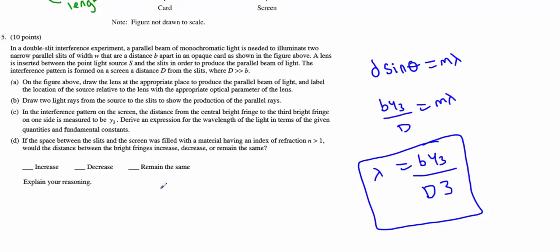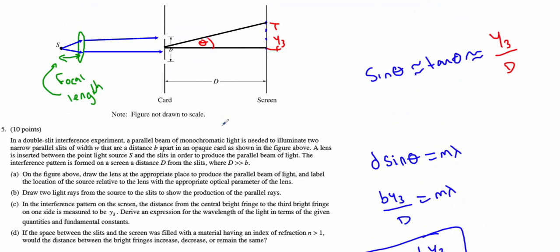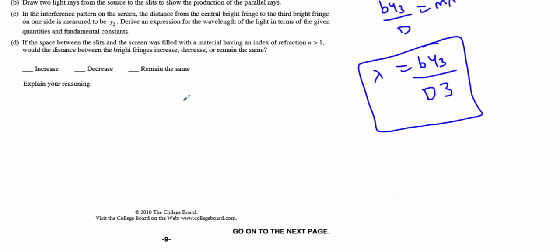Now we've got part D. We're going to fill that space between the slits and the screen with some material greater than n equals 1. So maybe we're filling water in here or something. We want to know what will that do to the distance between the bright spots, i.e. what will happen to Y3, really, or Y1, really.